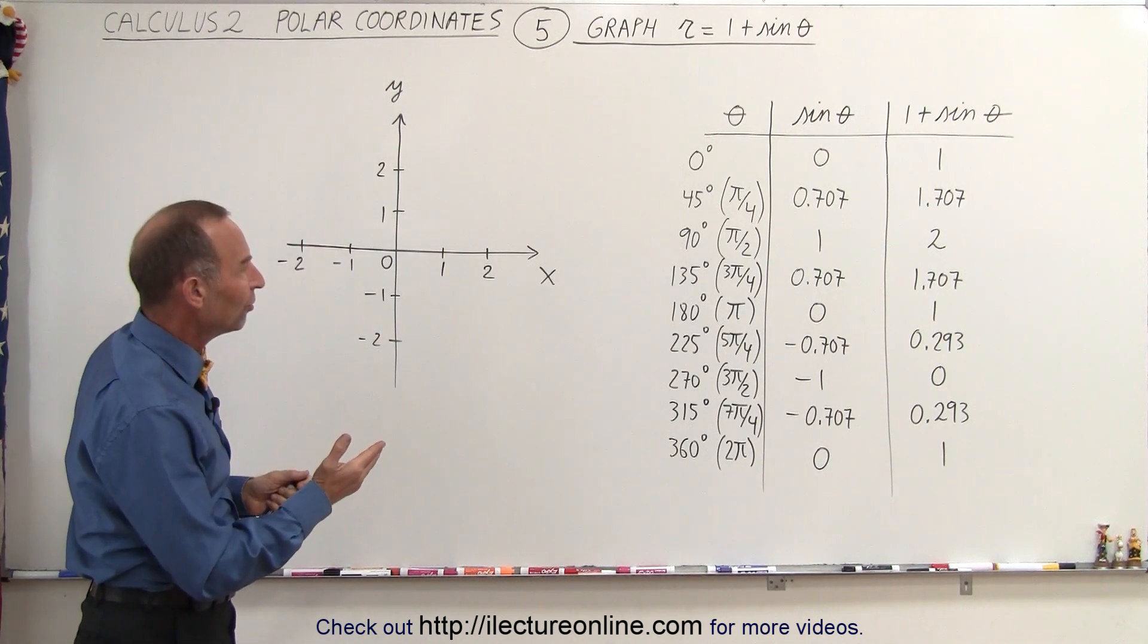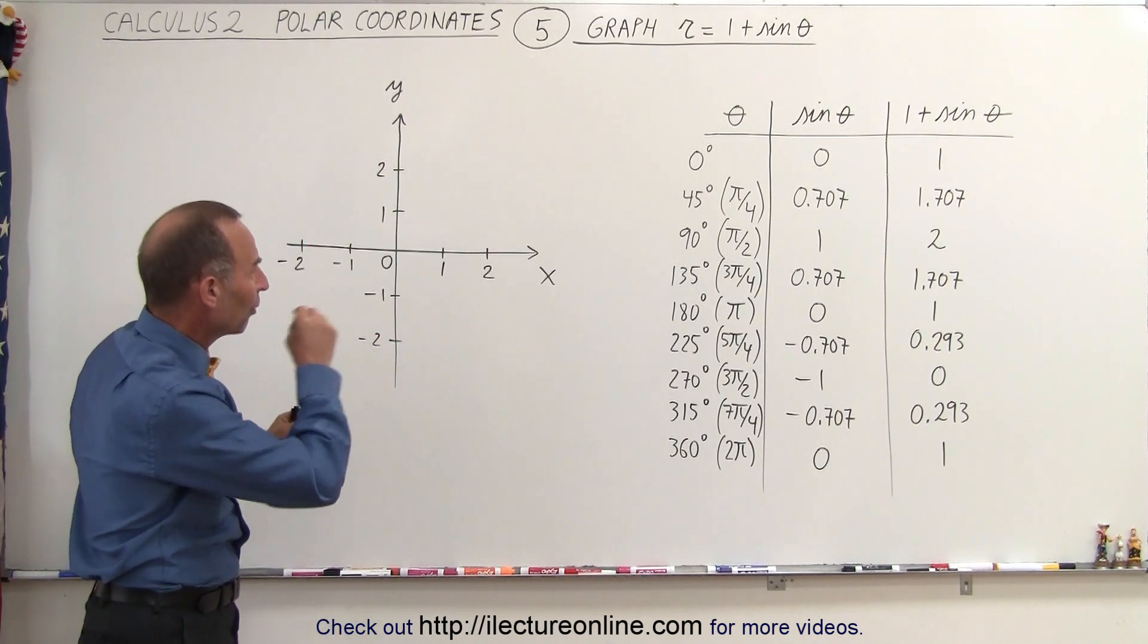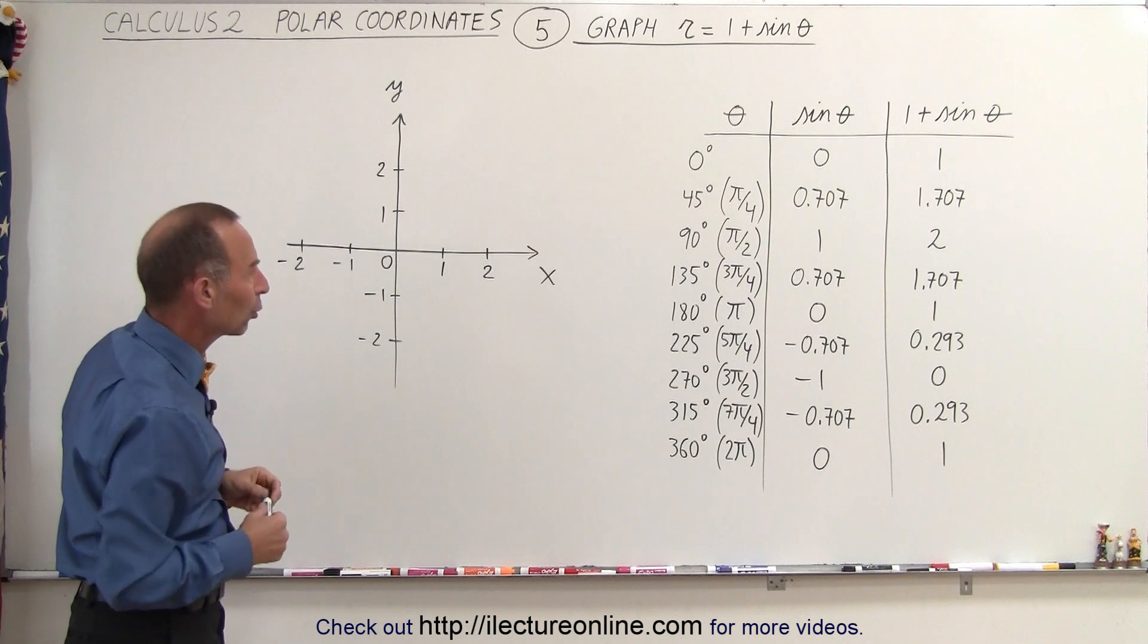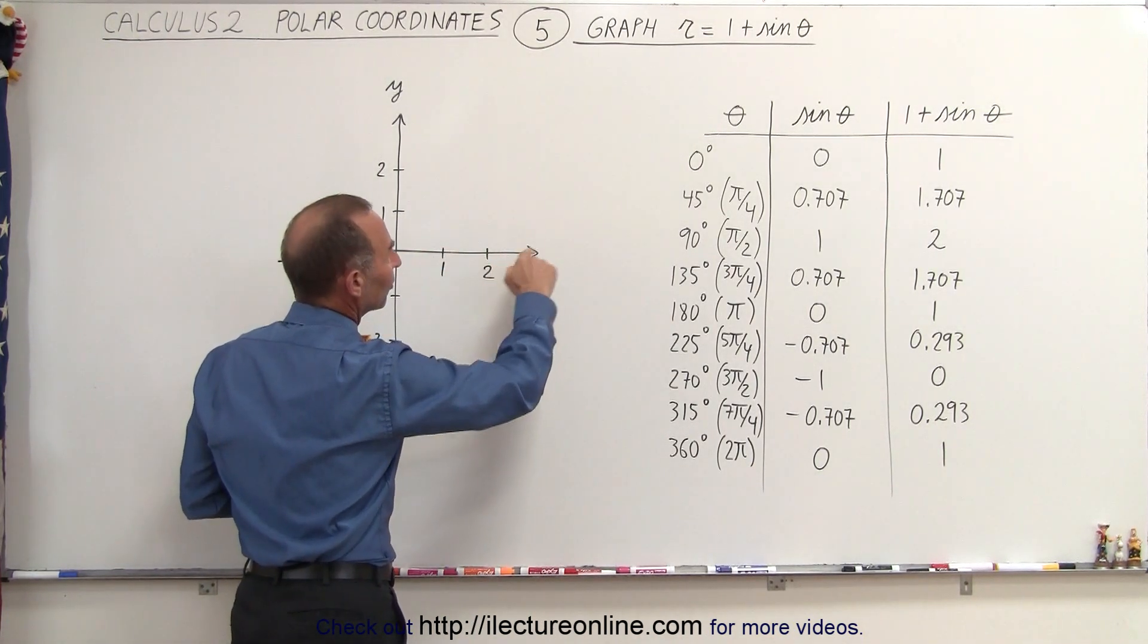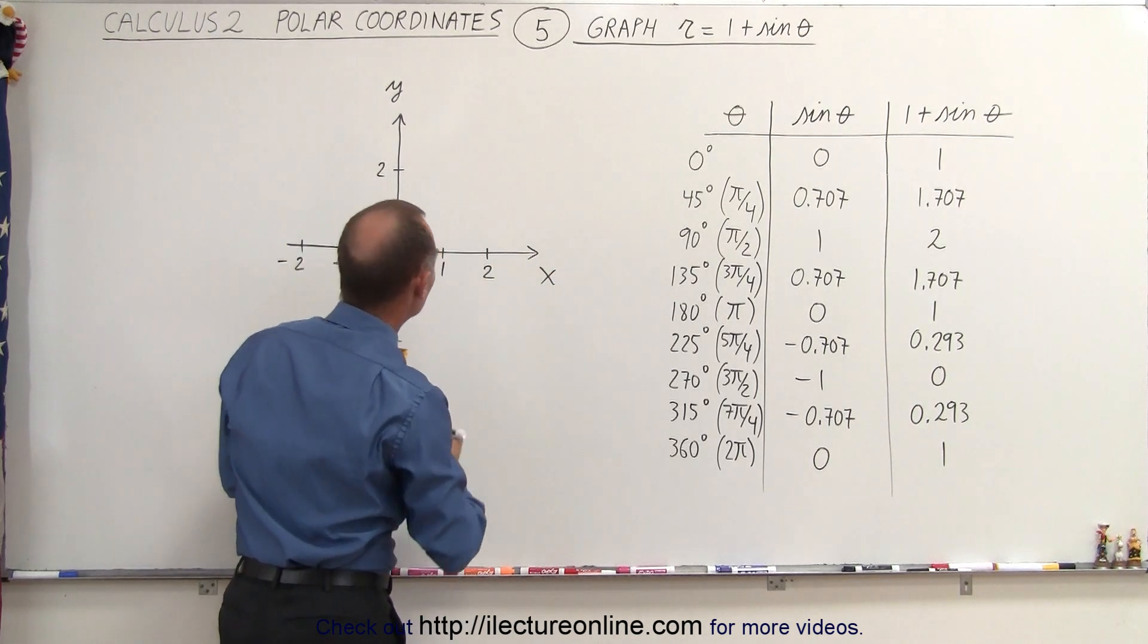Let's find the points that will allow us to form a graph representing that equation. First, when the angle equals 0 degrees, it's along the x-axis, and r equals 1.